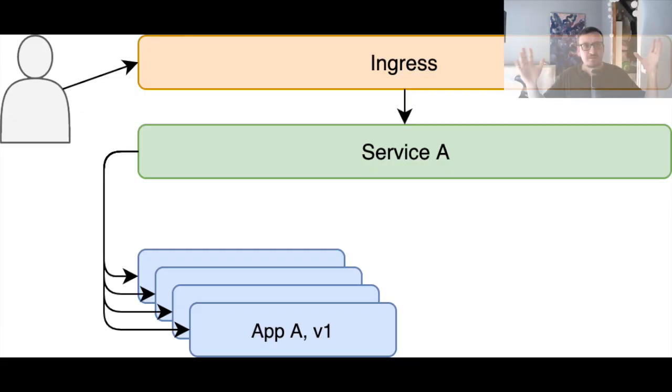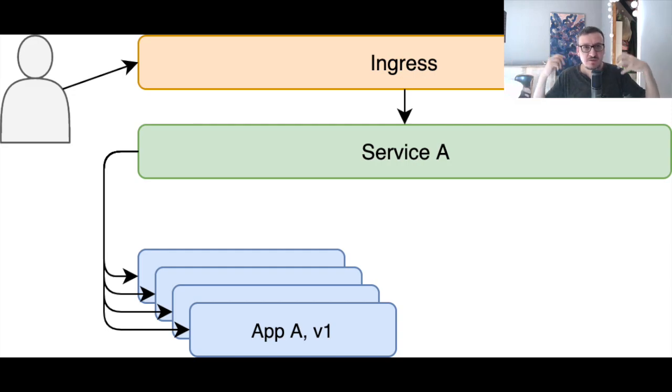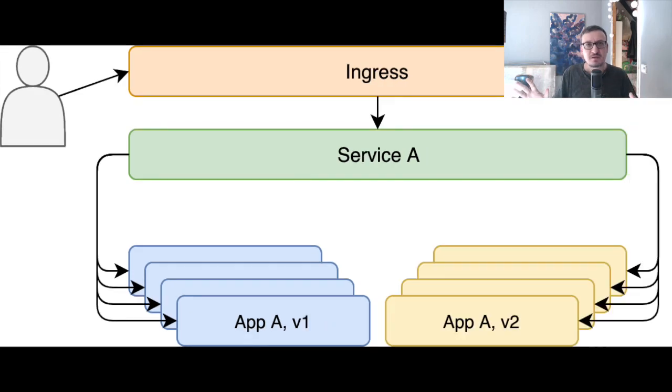Let's see how we would be able to improve on top of rolling updates using Canary deployments. It starts in the same way as almost anything else. We have the first release, with multiple replicas of a deployment or a stateful set. It has a service that allows access to that application and an ingress that allows external access to that application.